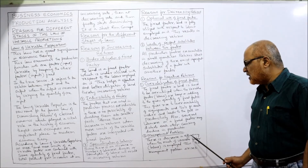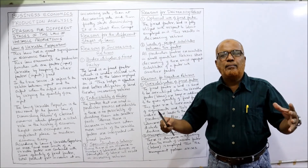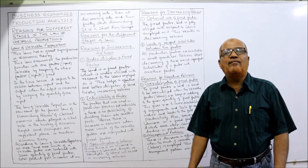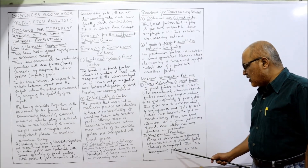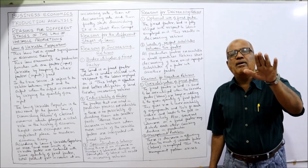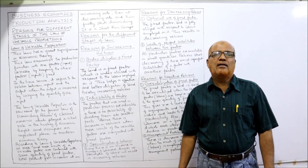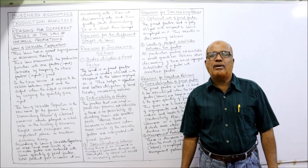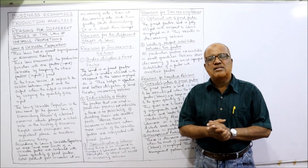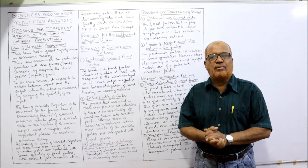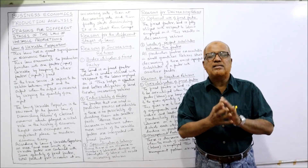One more reason for declining output in the third stage is management problems. When too many variable factors — too much labor — are employed, it becomes difficult for management to manage them efficiently. This management problem arises and causes productivity to fall. In this video I have explained the reasons why the three stages occur in the law of variable proportions. Watch the video a few times and you can write excellently in examination. We will continue our discussion on production analysis in the next video.